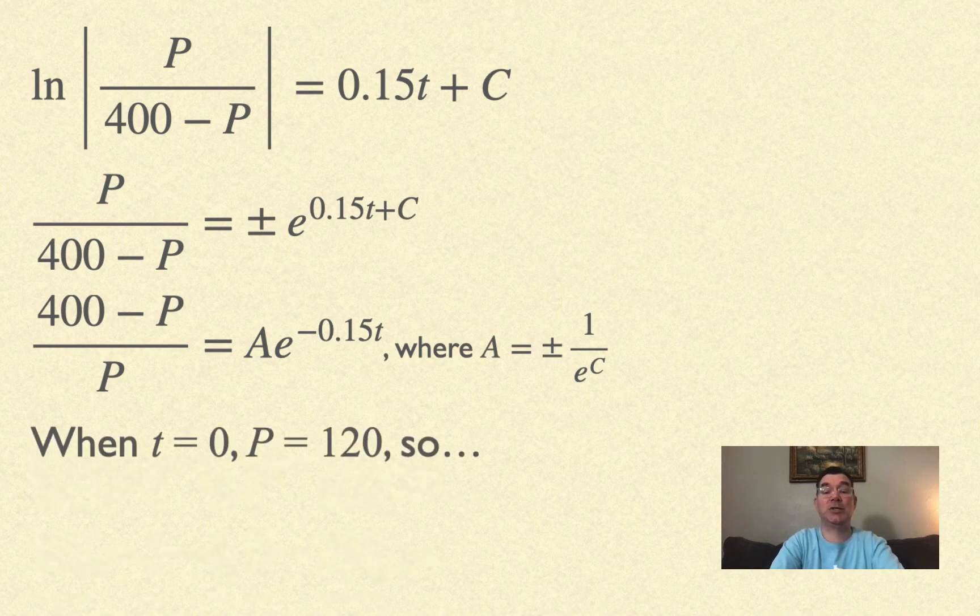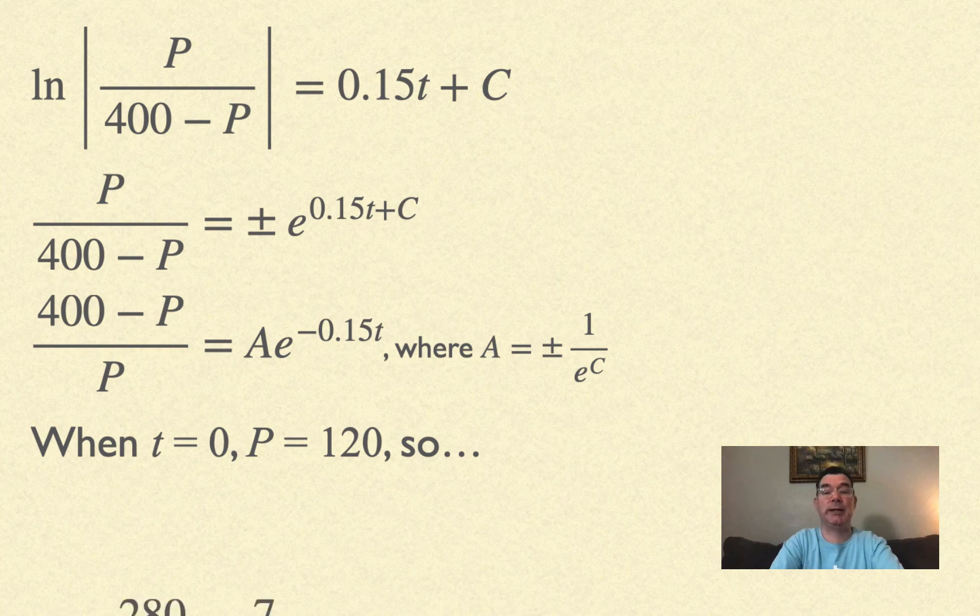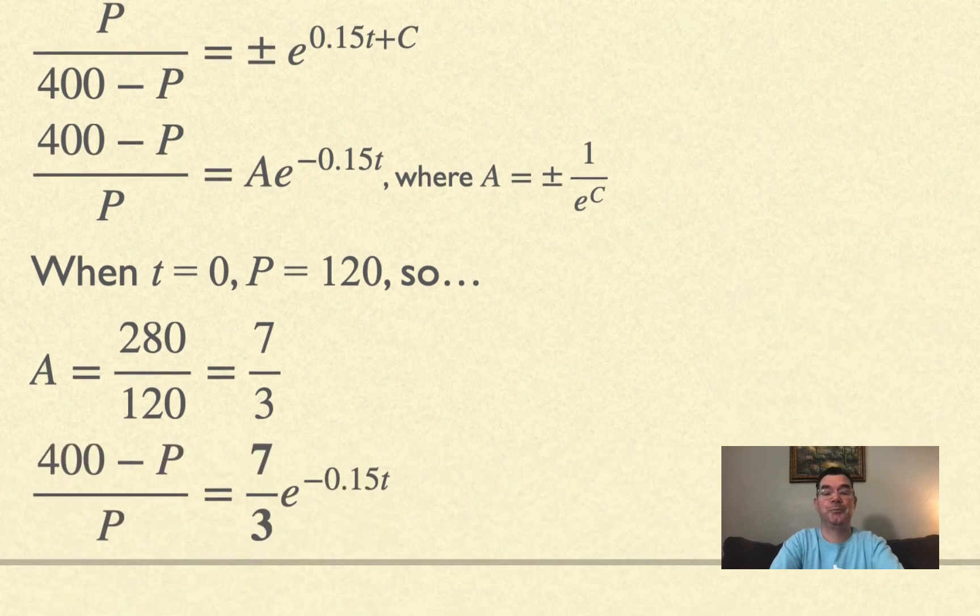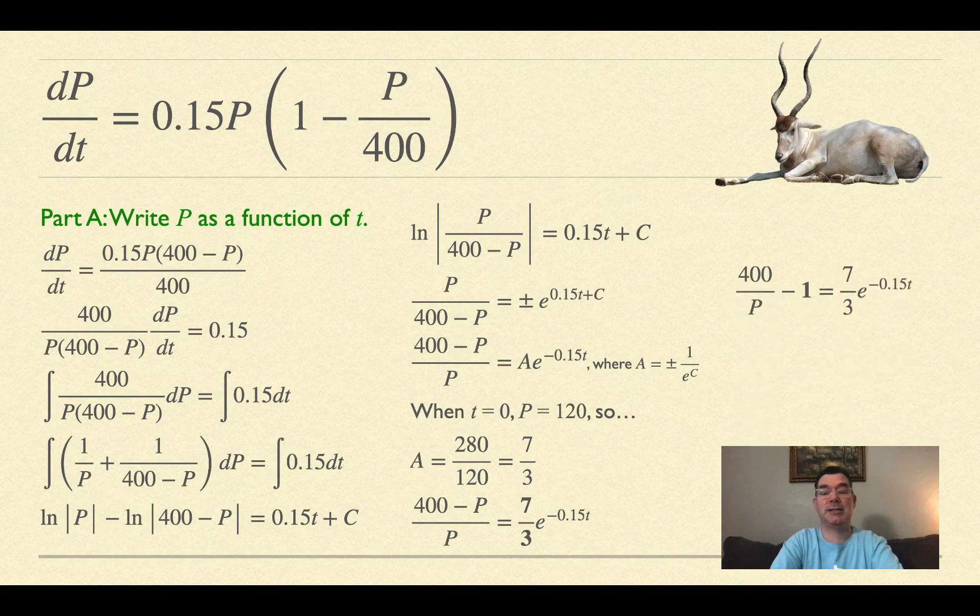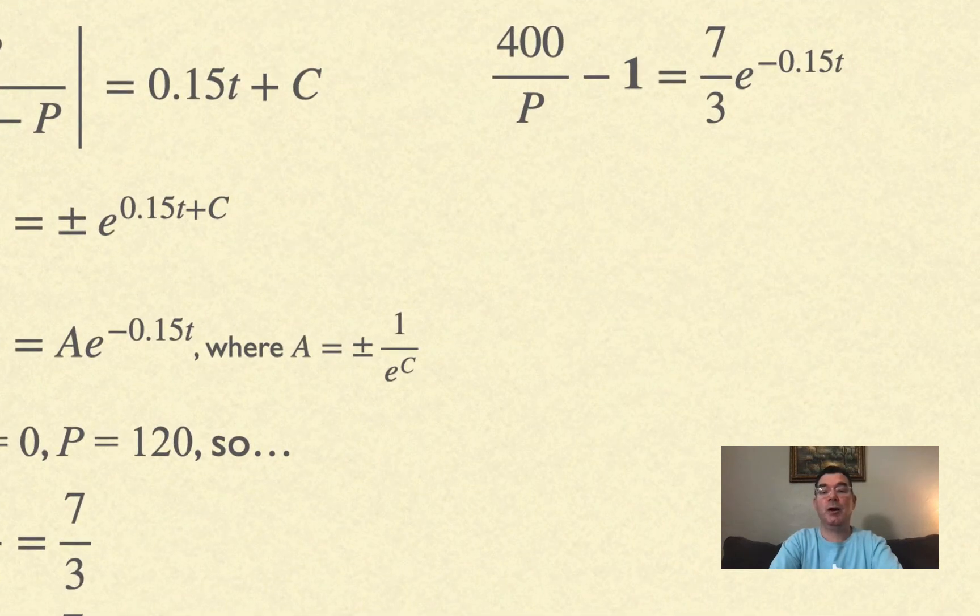I know when t = 0, the population is 120. Solving for the constant a, I get a = 7/3. So my equation is (400-P)/P = (7/3)e^(-0.15t). That's still not solved for P, so I have some work to do.